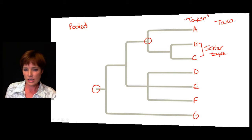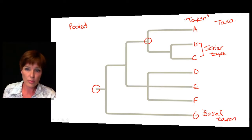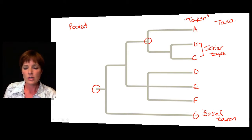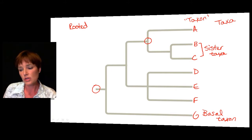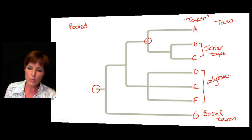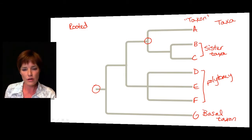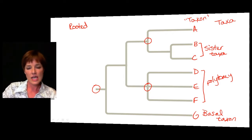Another thing we can see on this diagram is what we call a basal taxon at the bottom. This is because it doesn't really show any branching — we see it coming off of this rooted tree very early. That one is going to be less related to all the other taxa than they are to each other, so A through F would be more closely related to each other than they would be to this G taxon at the bottom. These groupings where we have more than two coming off of one branch point are what we would call a polytomy.